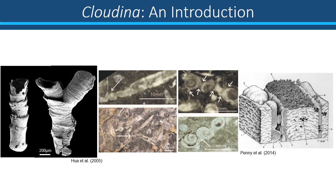Cloudina and other similar tubular skeletal and organic taxa, termed Cloudinomorphs, are formed of stacked funnels that lack a transverse crosswall, and funnels that flare out forming flanges and an annulated outer wall structure. Cloudina has a closed base, but this is not necessarily the case for all Cloudinomorphs. Cloudinomorphs are often found as singular tubes, but dichotomous branching has been observed in a few cases of Cloudina in China and in Spain. Mutual attachment between Cloudina tubes have been noted in Namibia, forming attachments at the base of the tube or cementation of adjacent tubes by cements termed meniscus cements.